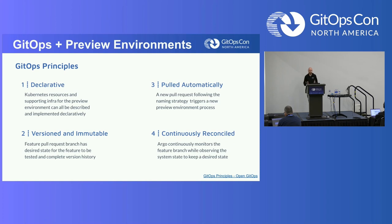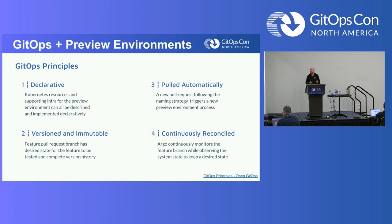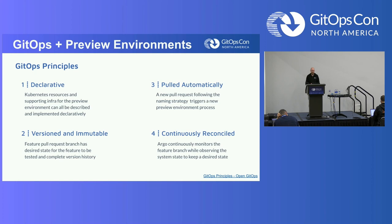Where does this fit in with GitOps? I'll give a plug to the Open GitOps group — this is perfectly in line with preview environments. You're looking for something that is declarative and versioned and immutable, pulled automatically, continuously reconciled. Preview environments within Kubernetes and Argo perfectly fit all of those. Resources define the infra and the environment we want to spin up. It's stored in Git — the entire life cycle, whether GitLab or GitHub — so we can trace when a preview environment was spun up, which branches it includes, and it lives and dies with that pull request's life cycle.